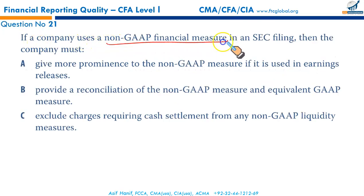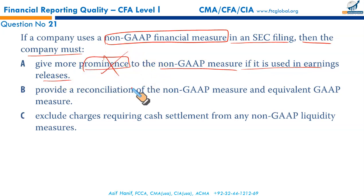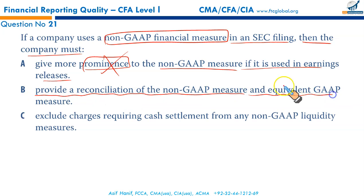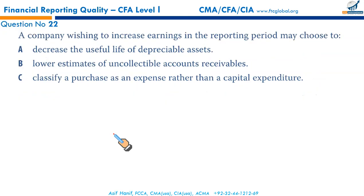If a company uses non-GAAP financial measures in an SEC filing, what must the company do? Give more prominence to the non-GAAP measure in earnings releases — no, this is not allowed under US GAAP. Provide a reconciliation of the non-GAAP measure and the equivalent GAAP measure — yes, a reconciliation is required, as discussed in the reading. Exclude charges requiring cash settlement from non-GAAP liquidity measures — exclusion is not required; reconciliation and justification are required. B is the correct option.